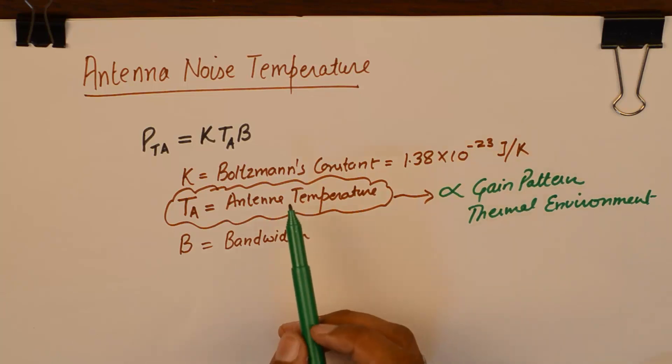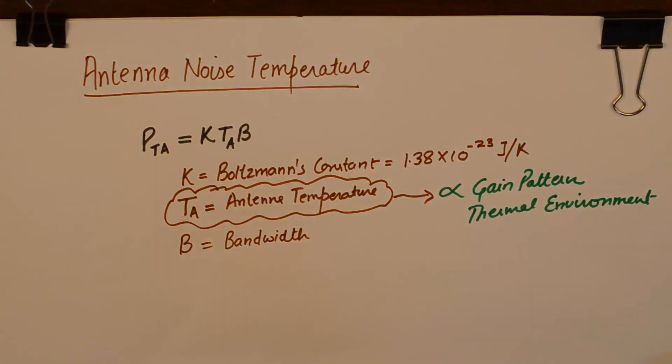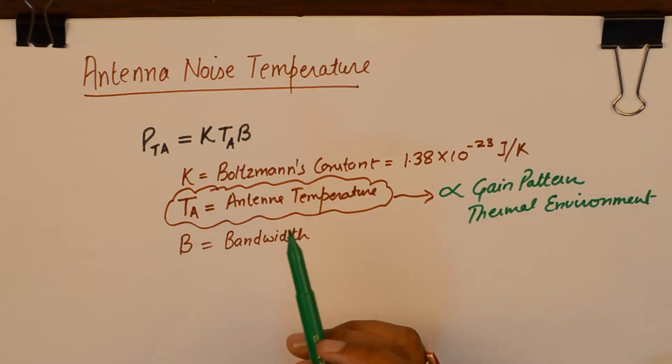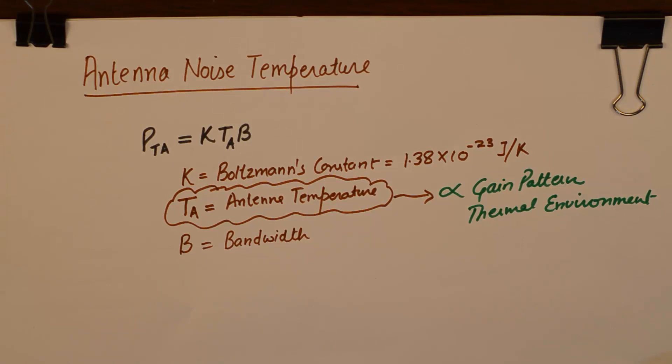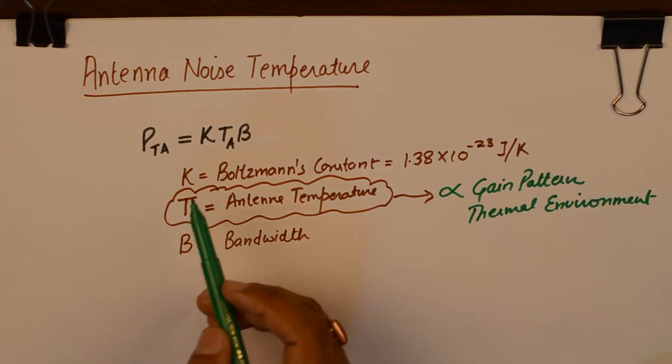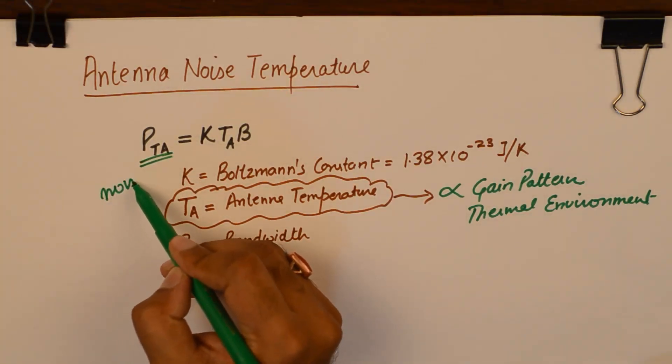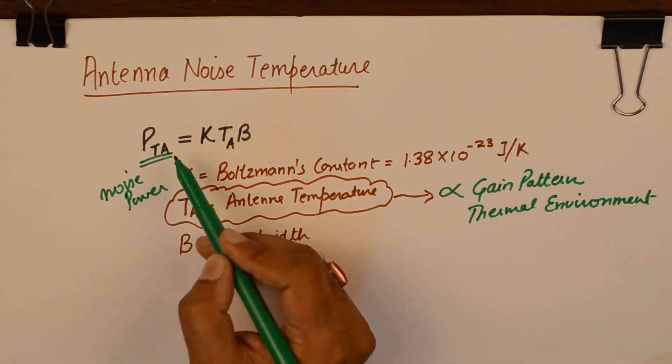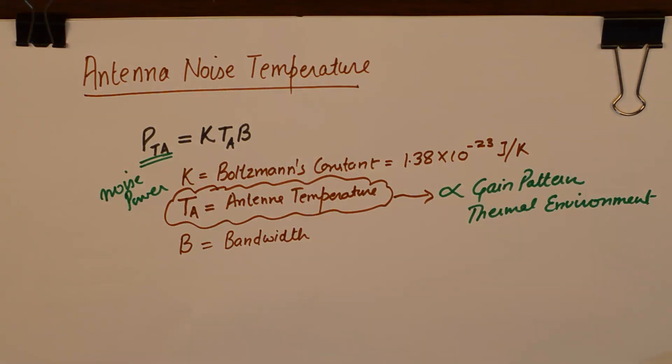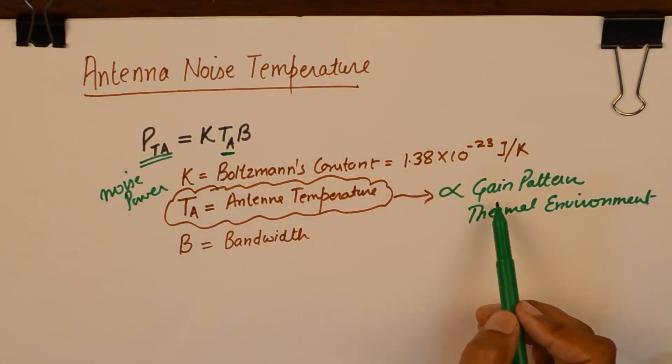If you talk about the noise power in some electrical component like diode or transistor or any other device, the temperature here would represent the ambient temperature of the place where diode or transistor is placed. However, in case of antenna, when we calculate the noise power, which is a more meaningful quantity to calculate rather than simply the temperature of the antenna, the temperature would depend upon two factors.